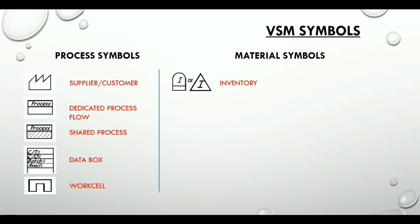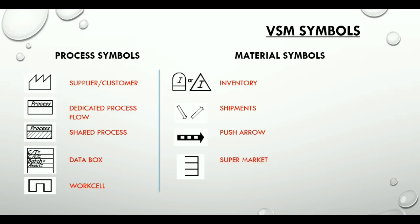Moving on to material symbols. The inventory icon shows inventory between two processes. The shipment icon represents movement of raw materials from one point to another. The push arrow icon represents the pushing of material from one process to the next. The supermarket icon, also known as a kanban stock point, represents an inventory supermarket. The material pull icon is used where supermarkets connect to downstream processes. The FIFO lane icon — first in, first out — is used when processes are connected with a FIFO system that limits input.